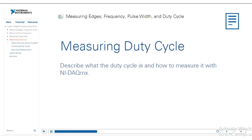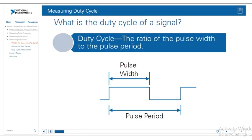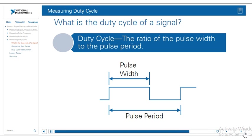The last type of measurement we're going to talk about is duty cycle. Duty cycle is the ratio of pulse width to period — the pulse width is the high time of your signal over the pulse period, which goes from rising edge to rising edge or falling edge to falling edge. For example, if your digital signal has a period of 10 milliseconds and its pulses are 2 milliseconds long, that signal has a duty cycle of 20%.